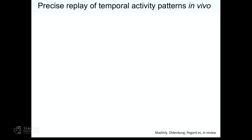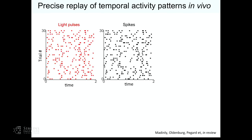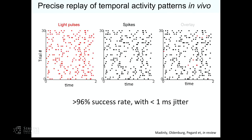If you look at the photocurrents: compared to other commonly used opsins, ChromE — literally a point mutation in Chronos — gives basically a fourfold increase in photocurrent. That fourfold increase was necessary because layer 2-3 pyramidal cells are not very excitable: they're hyperpolarized, have low input resistance, and other opsins don't get you to threshold reliably. ChromE does that no problem. The fraction of cells you can spike under any condition is basically almost 100% with ChromE.